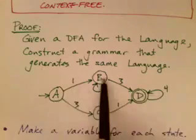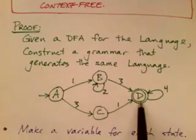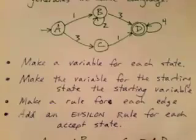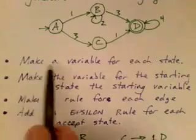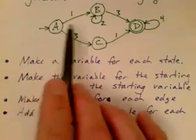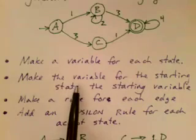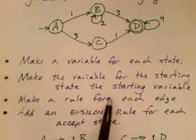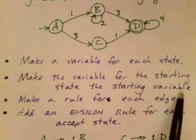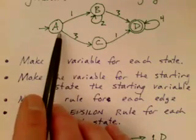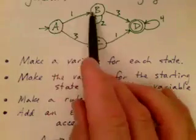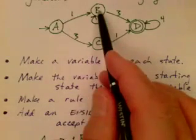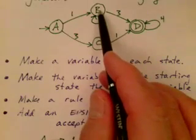There is a starting state and in this case only one accepting state. Here's how you can make a context-free grammar to accept this language: make a non-terminal for each state, so our set of non-terminals will be A, B, C, and D. Then make the non-terminal for the starting state, A, be the starting non-terminal for the grammar. For each edge in the deterministic finite state machine, make one rule in the grammar.